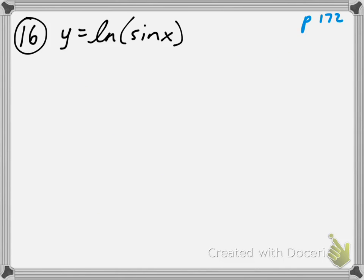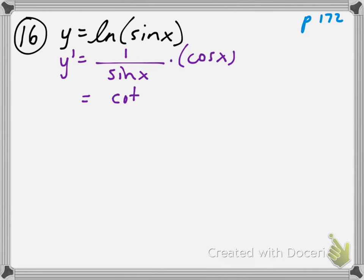Number 16: y equals ln of sine of x. And y prime — we know that the derivative of ln of anything is 1 over that anything, and then we multiply that by the derivative of that anything. The derivative of sine of x is cosine of x. So we could leave it like that, or we could write it as cotangent of x, which is probably the best way to write it.